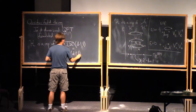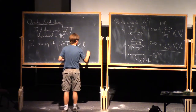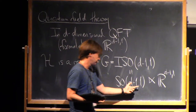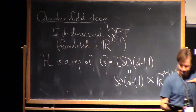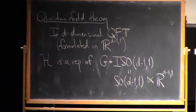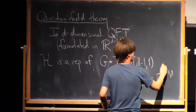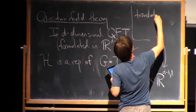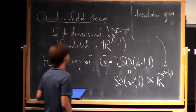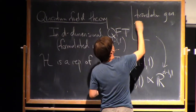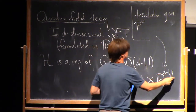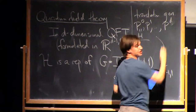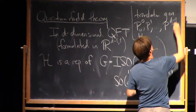ISO(d-1,1) consists of SO(d-1,1) — the linear transformations, the rotations and boosts preserving the Minkowski metric — plus the translations, combined in a semidirect product. The translation generators: I'll call P0 for the translation in the zero direction, the time-like direction, and sometimes we also call that H, the Hamiltonian. And then P1 up to P_{d-1} for the translations in the other directions. So d is the dimension of space-time.